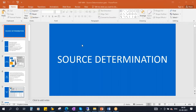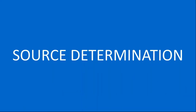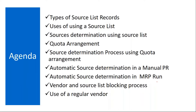We'll be starting our next topic: source determination. The topics we are going to cover are type of source list records, uses of a source list, and source determination using source list. These are the ones we will cover today. In tomorrow's class, we will see quota arrangement.